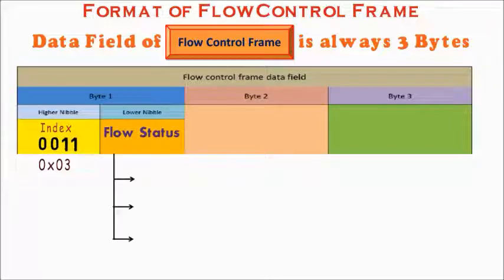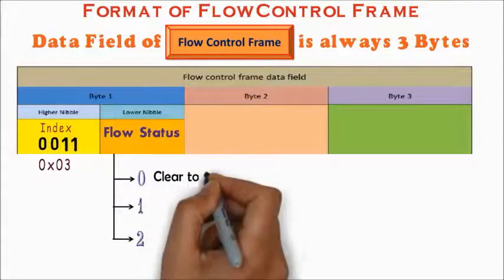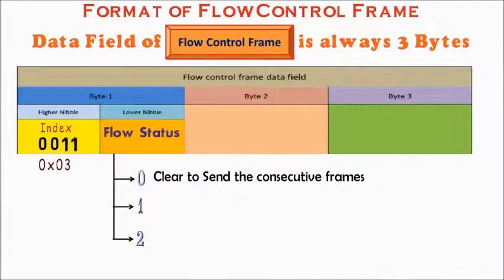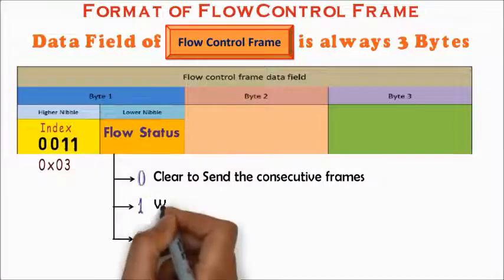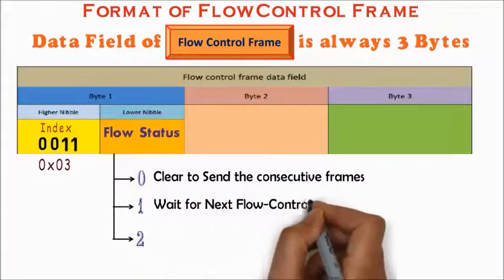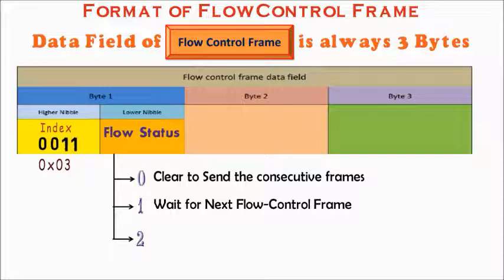Flow status can have three possible values. They are 0, 1 and 2. 0 represents clear to send the consecutive frames. One represents wait for next flow control frame. So the sender doesn't send any consecutive frame and waits for one more flow control frame from the receiver.